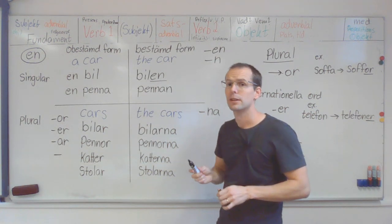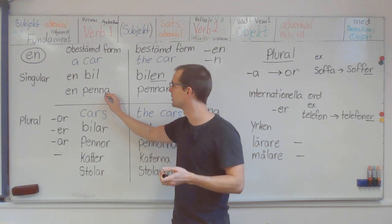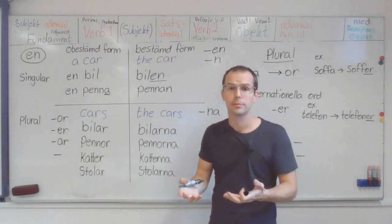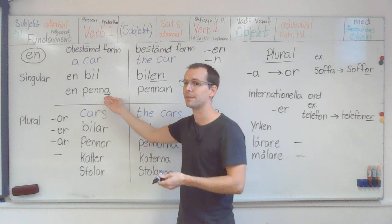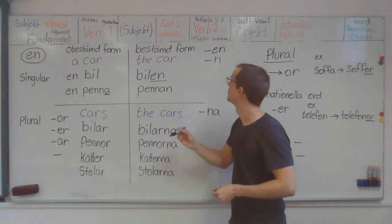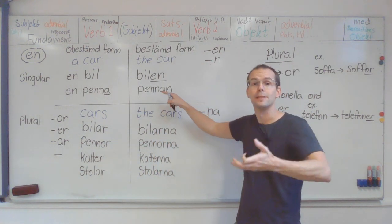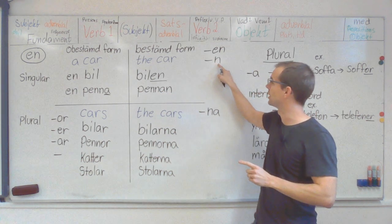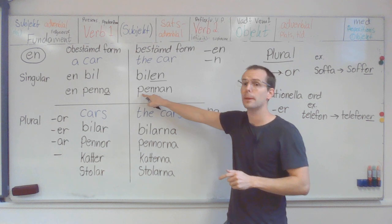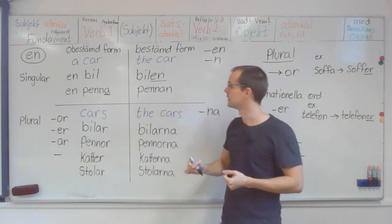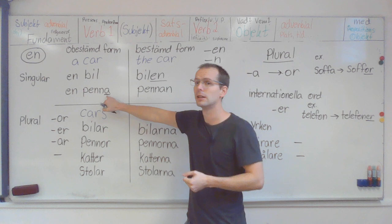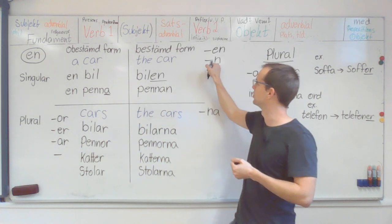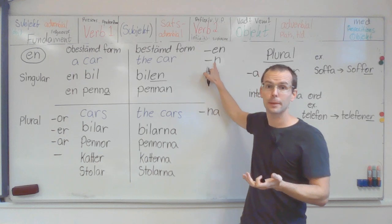And if you have a word, a noun, that ends with a vowel, in this case, penna, pencil, you don't say penna en. No. You just use en. So it becomes pennan. Pennan. And it is because of a vowel at the end. And then we just use en. Pennan.